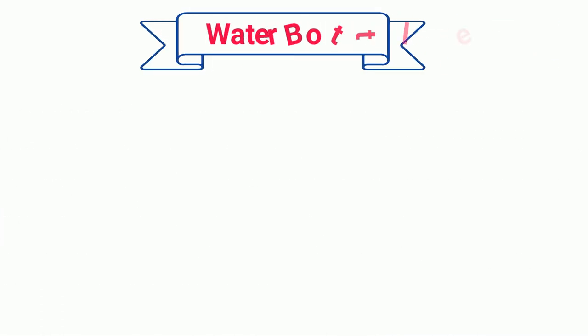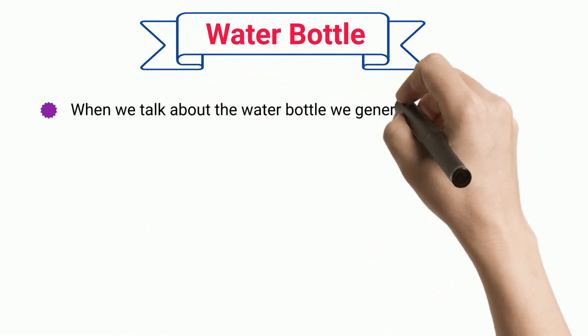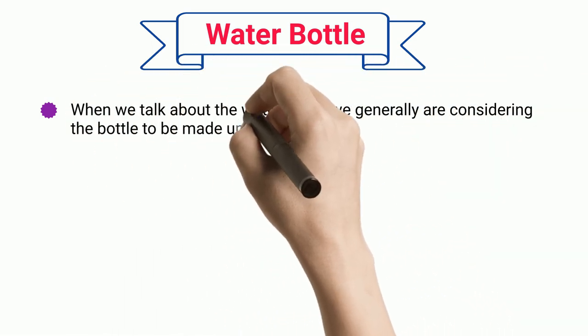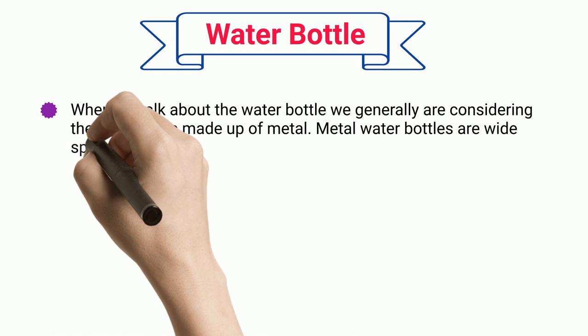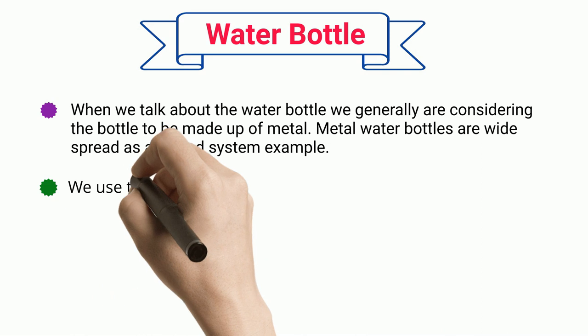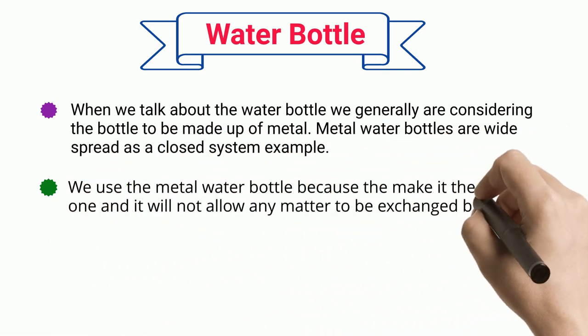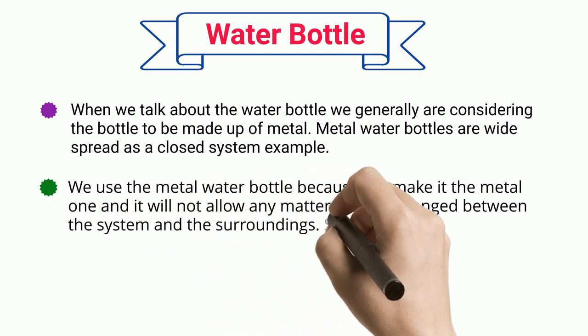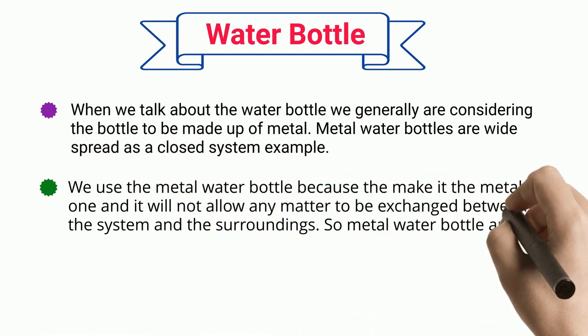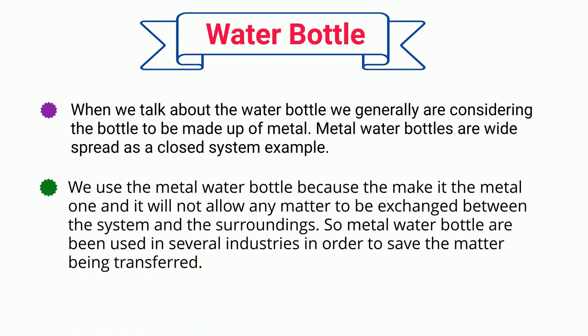When we talk about the water bottle, we are generally considering the bottle to be made of metal. Metal water bottles are widespread as a closed system example. They do not allow any matter to be exchanged between the system and the surroundings, and so metal water bottles are used in several industries in order to prevent matter from being transferred.